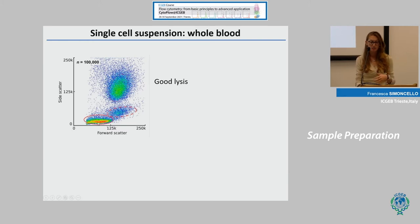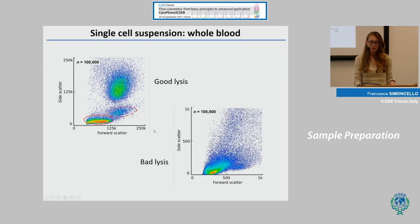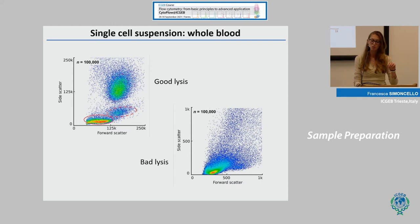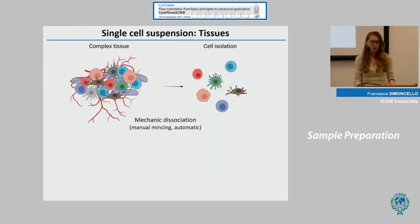You can find T-lymphocytes in the lower part, monocytes in the middle population, and granulocytes as the more complex population. However, when you don't perform a good lysis of red cells, this distinction is no longer possible. Another consideration: when you are not able to physically remove red cells, you can label your sample with CD45 antibodies and exclude red cells during analysis, because red cells are negative for CD45.